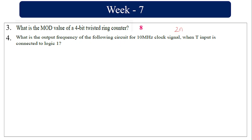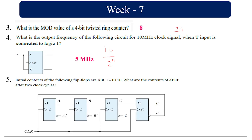What is the output frequency of the following circuit for a 10 MHz clock when input T is connected to logic 1? When T is connected to logic 1 it toggles. The formula is input frequency divided by 2 to the power n, where n is the number of flip-flops. Here n = 1, so 10 MHz ÷ 2 = 5 MHz.